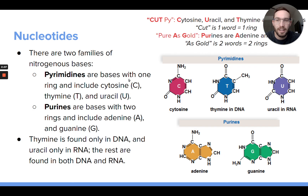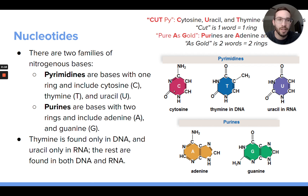The nitrogenous bases found in nucleotides could be one of four different types in DNA. The nucleotides in DNA are going to contain a nitrogenous base that is either cytosine, thymine, adenine, or guanine.